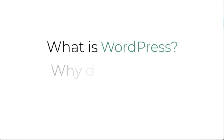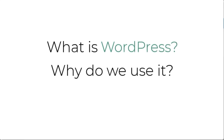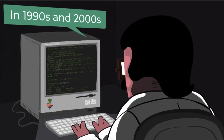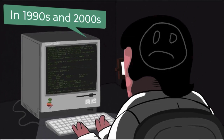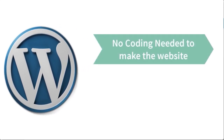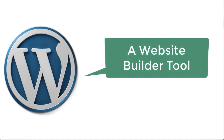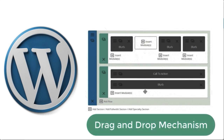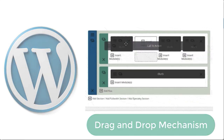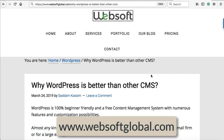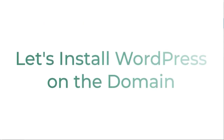In this lecture, we're going to learn about WordPress and then install it on our domain name. If we look back in 1990 or 2000, developing a website required writing code with 100% manual work. But thanks to WordPress, it gives you the flexibility to design and develop your entire Amazon affiliate website without writing a single line of code and without any prior knowledge of programming. WordPress is a tool through which we can use the drag-and-drop mechanism to design and develop your entire website quickly.